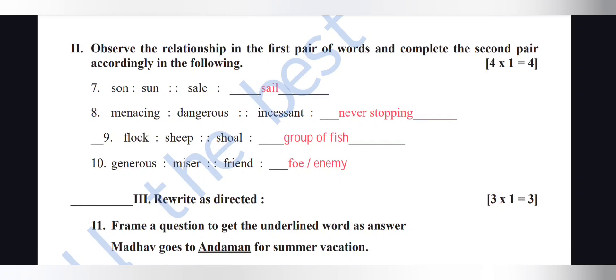Ninth question: 'flock : sheep' — a flock of sheep. Next: for a group of fish we use 'shoal.' 'Generous' opposite is 'miser' (stingy/kanjus). 'Friend' opposite is 'foe' or 'enemy.' These are the answers to the relationship pair questions.